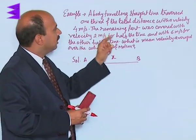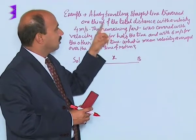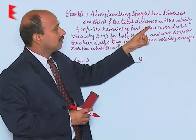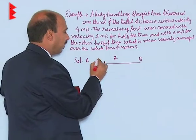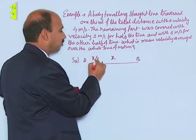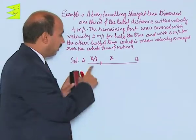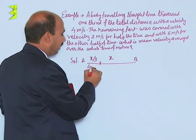Now see the first condition. A body traveling a straight line travels one-third of the total distance with velocity 4 meters per second. Suppose this is the point I have taken, one-third x/3 distance with a velocity of 4 meters per second.